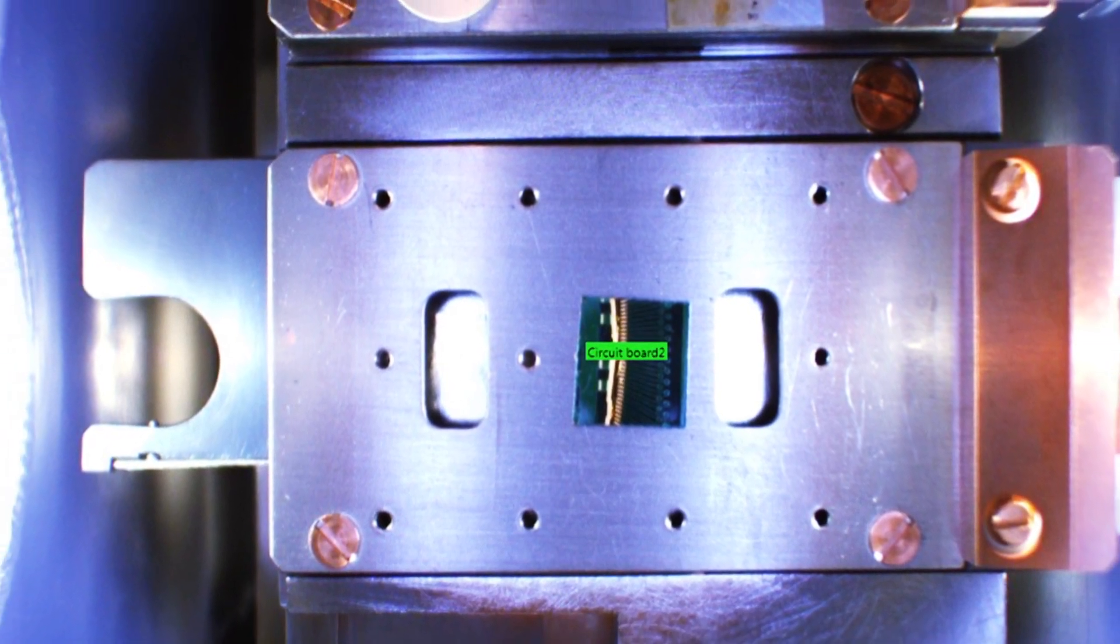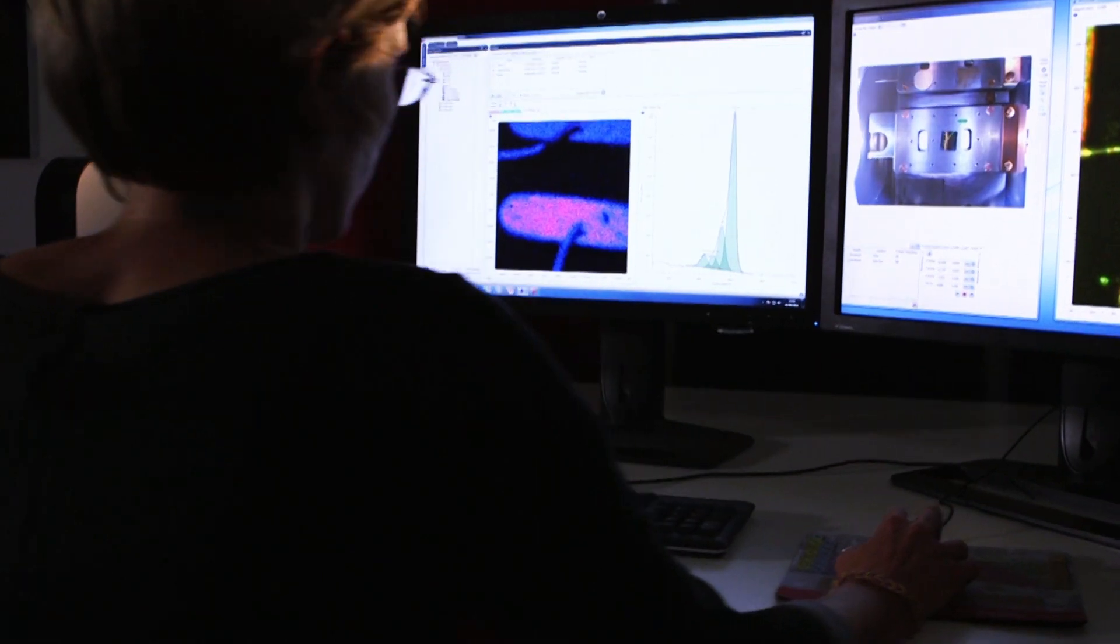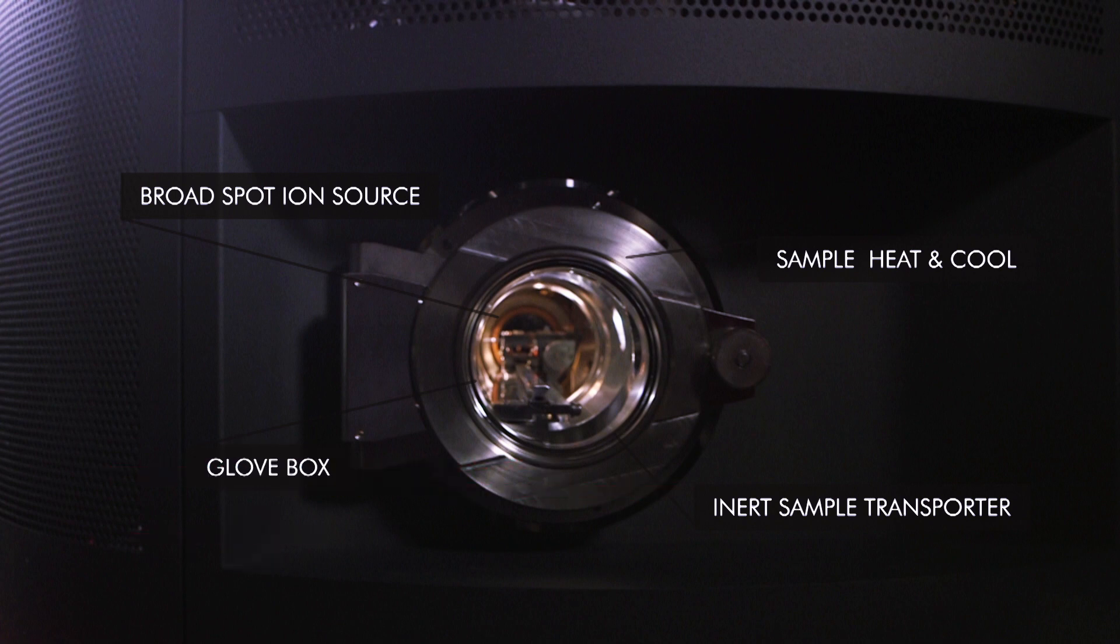The FlexiLock can also accommodate sample preparation and surface modification options, including but not limited to sample heat and cool, inert sample transporter, broad spot, ion source, and glove box.